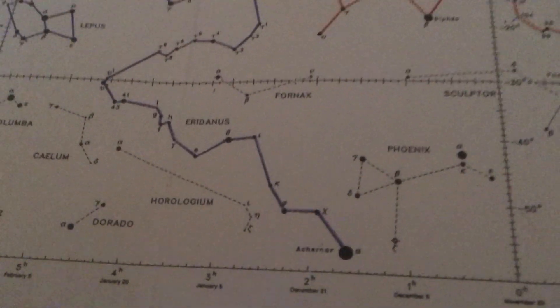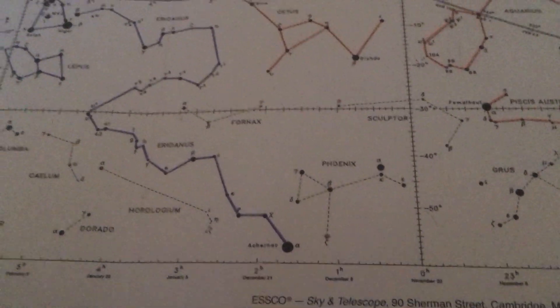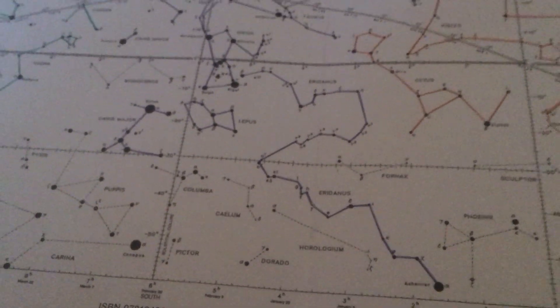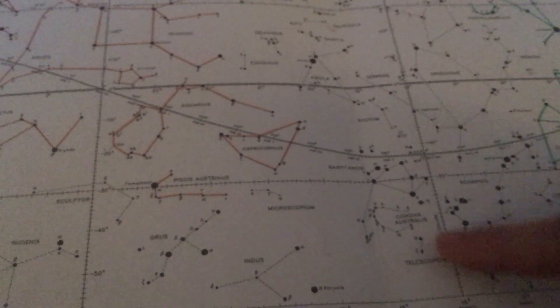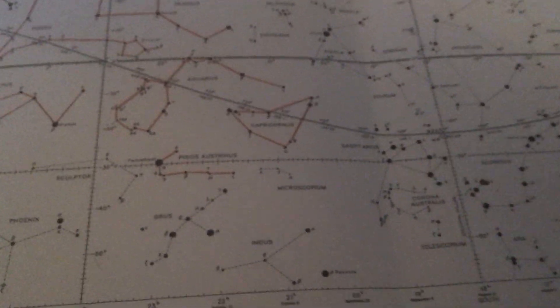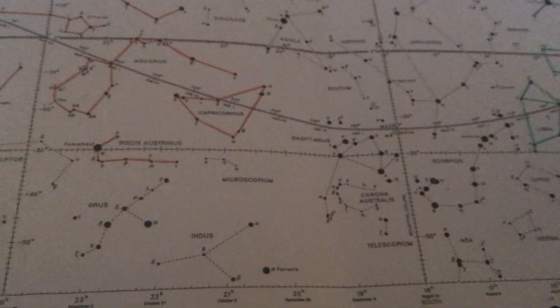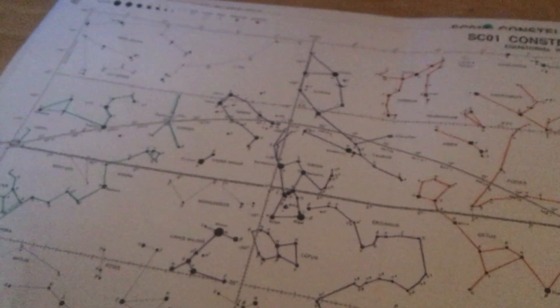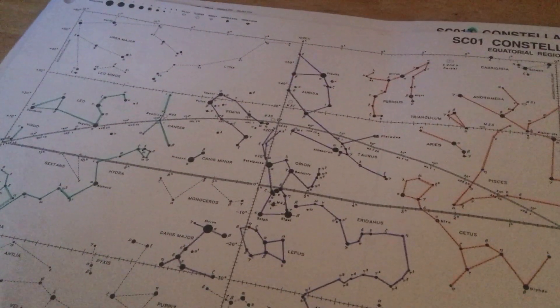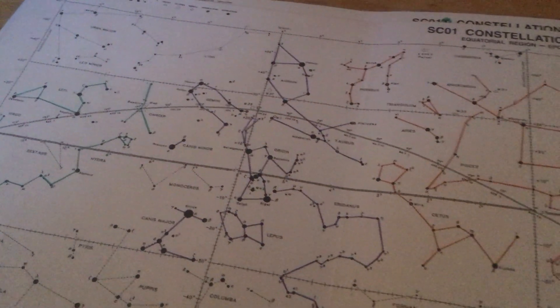Way down south we have the bright star Achenar. But just understand from our latitude, we can't actually see down this far. Our visual limit here in Pennsylvania is probably right around negative 40 degrees declination. All right, so get one last look. Here is how your winter sky should look on your O1 chart.